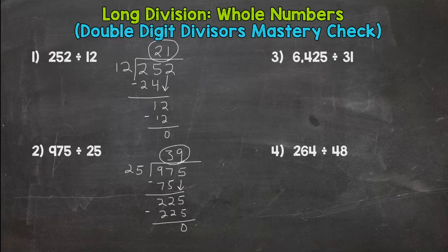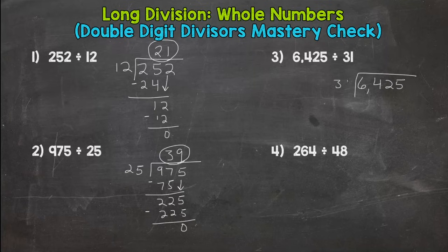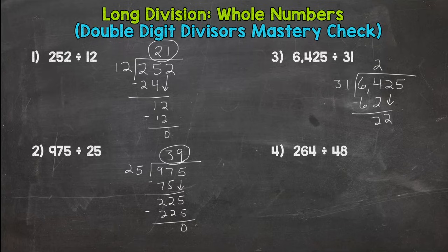So number three, we have 6,425 divided by 31. So how many groups of 31 out of 64? Maybe you had some work off to the side, that's fine, or you thought 31 times 2 is 62, that's as close as I can get, and it is a two. Multiply, subtract I get a two, bring down a two. How many groups of 31 can I pull out of 32? Well I can't do it, so I need a zero here. Zero times 31 is zero. Subtract I get 22, bring down this five.